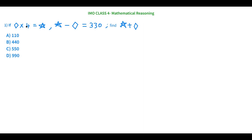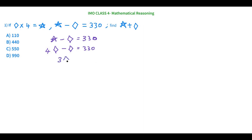Let's take the second equation: star minus diamond equals 330. We know that star is 4 times diamond, so in place of star I'll put 4 × diamond. So we have 4 diamond minus diamond equals 330, which gives us 3 diamond equals 330. Therefore, 1 diamond equals 110.